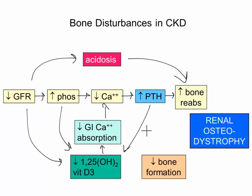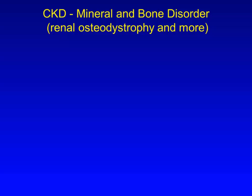Meanwhile, the decrease in 1,25 synthesis results in decreased bone turnover. So between the increased bone reabsorption from too much PTH and buffering of excess hydrogen ion, and the decreased formation from too little 1,25, renal osteodystrophy — or disordered bone growth — develops.